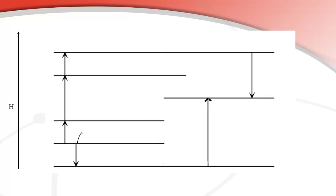The example I'm going to look at is making magnesium chloride, MgCl₂. So you start with the delta H formation — that's Mg plus Cl₂, making magnesium chloride from its elements — and that arrow is going down, and we make MgCl₂ as a solid.